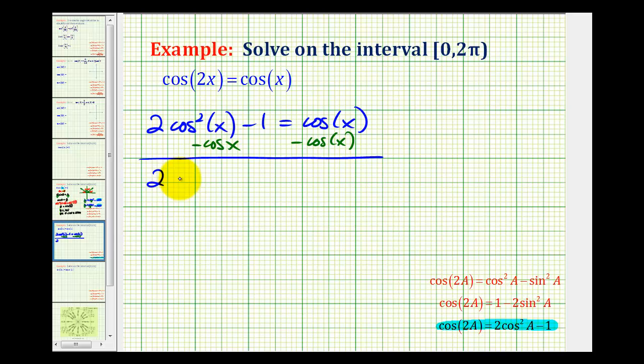We'll have 2cos²(x) - cos(x) - 1 = 0. The 0 came from the right side where we have cos(x) - cos(x). Now let's see if this factors.